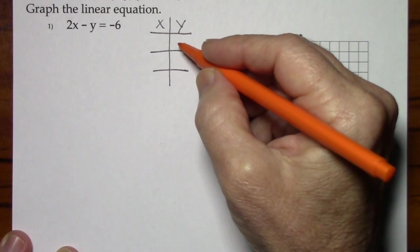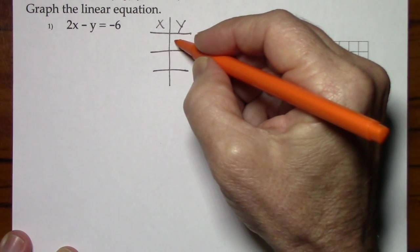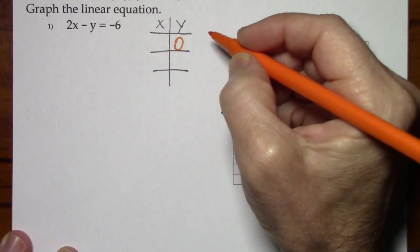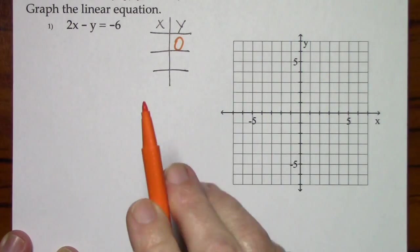I'm going to use an x-y chart because I will be using slope-intercept form on a later problem. Whenever I use the chart, I like to focus on the intercepts. When y is 0, we'll find out what the x-intercept is.